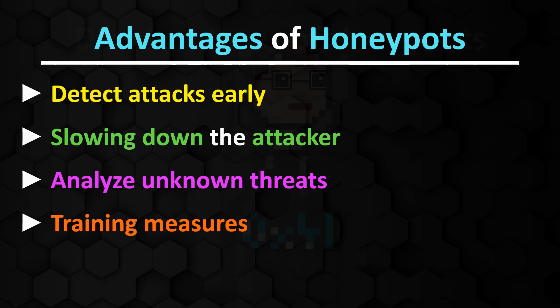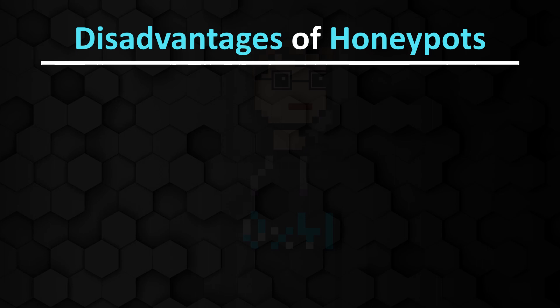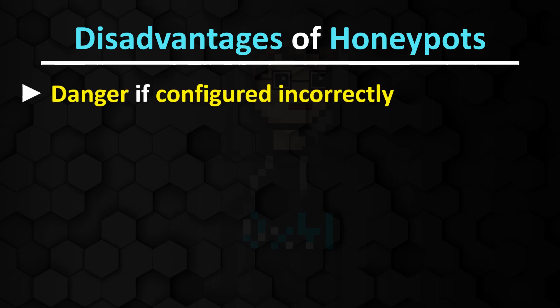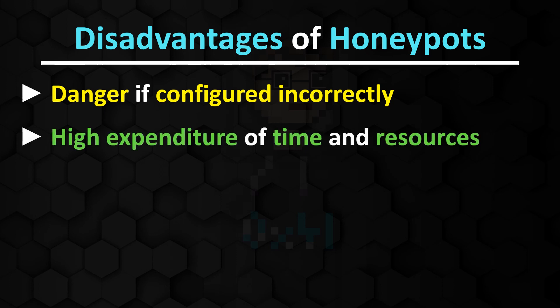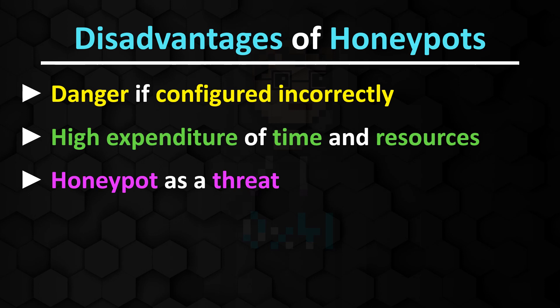But what are the disadvantages of honeypots? Honeypots can pose a danger if configured incorrectly. High-interaction honeypots require a great deal of time and resources, which also has a financial impact. The work is not done with the one-time configuration of the honeypot, because it must also be maintained and the collected data needs to be analyzed. Honeypots can sometimes be classified as a threat by other systems, such as an IDS, which in turn can lead to false alarms.